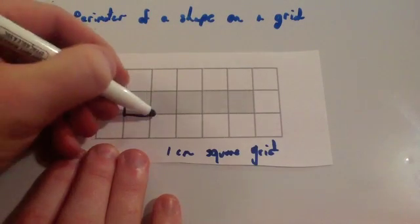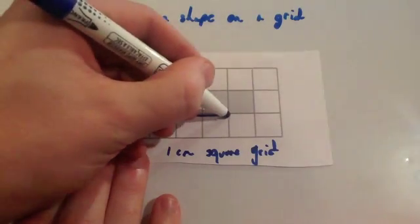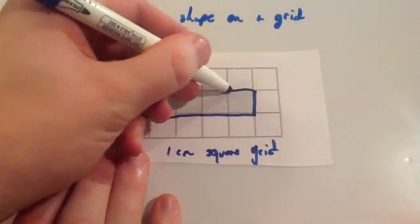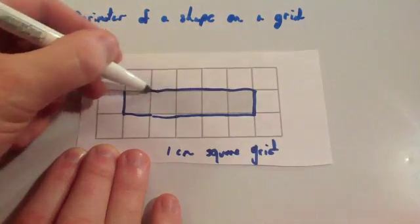So that's 1cm, 2, 3, 4, 5, 6, 7, 8, 9, 10, 11, 12.